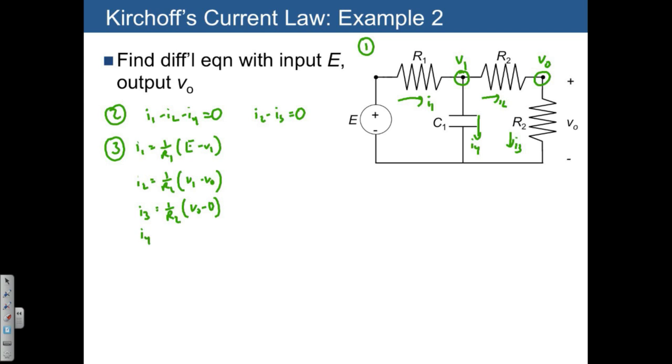Finally, I4 is the capacitor current: C1 times s times V1 minus 0.